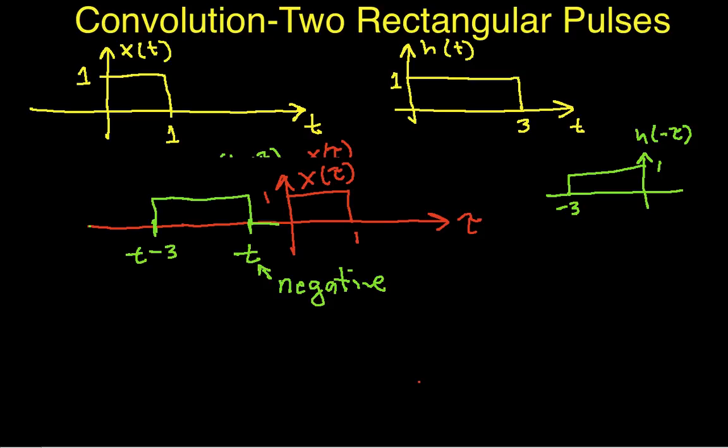Okay. So the reason I've chosen to have a negative t is my x of tau here is non-zero between 0 and 1. And with the negative t, my h, flipped and shifted, is actually shifted so far to the left that the non-zero parts of h and x don't even overlap. So basically, whenever the shifted and flipped h is non-zero, x is zero. And whenever x is non-zero, the flipped and shifted h is zero. So you get the product being zero everywhere.